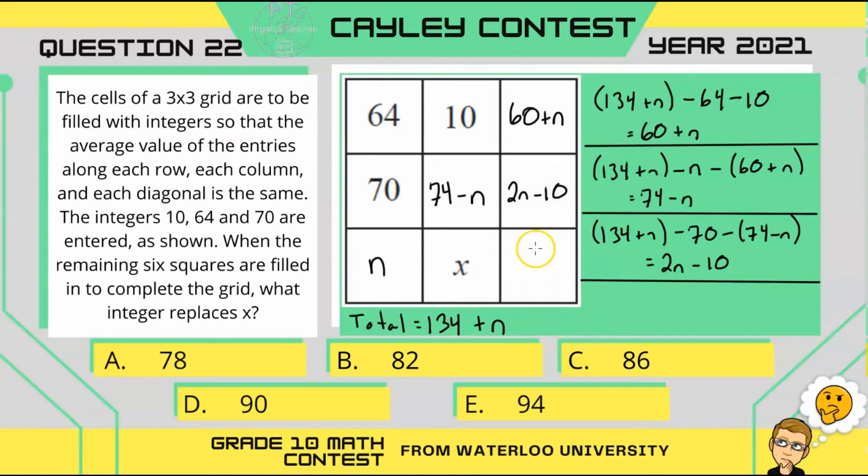Next, this last cell here. So, to figure out this cell here, let's look at this diagonal. So, we're going to take the total and subtract the other two cells in the diagonal. So, we have 134 plus n minus 64 and minus 74 minus n, which will reduce to 2n minus 4. So, let's write that in here.